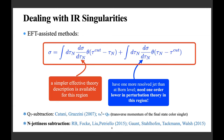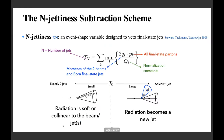There are two methods in the slicing category: the so-called q_T subtraction, where the resolution parameter is the transverse momentum of the final-state color singlet — primarily developed for color singlets, with some recent results for tt-bar — and then there is N-jettiness subtraction, which I will be discussing in this talk.